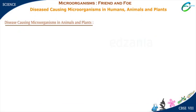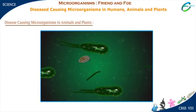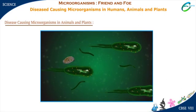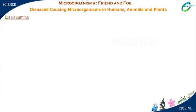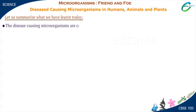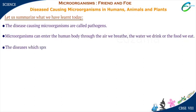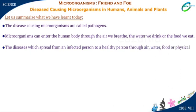To conclude, the world of microbes is diverse — some are useful and some are life-risking. In summary: disease-causing microorganisms are called pathogens. Microorganisms can enter the human body through the air we breathe, the water we drink, or the food we eat. Diseases which spread from an infected person to a healthy person through air, water, food, or physical contact are called communicable diseases.